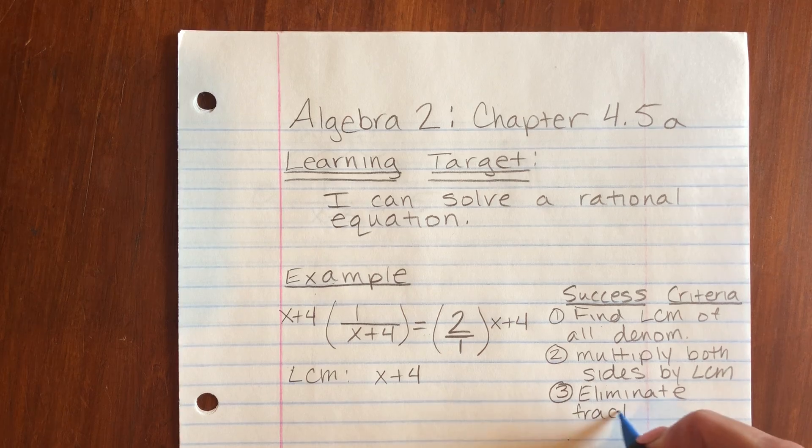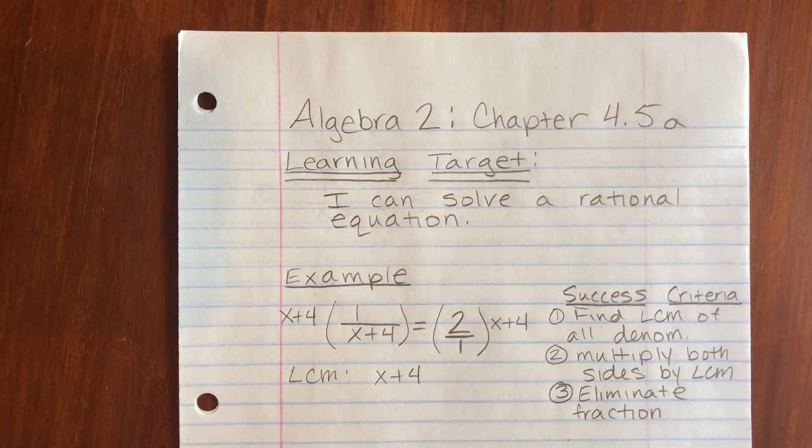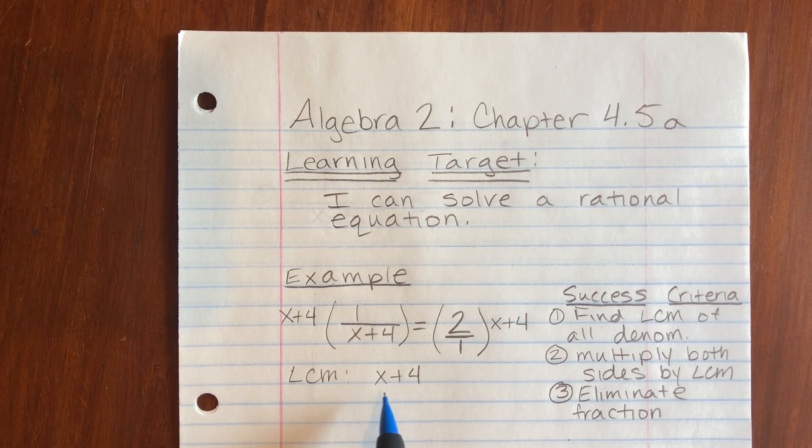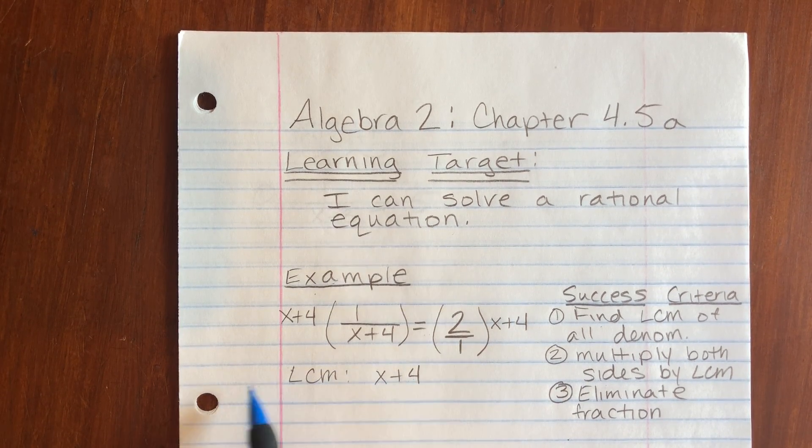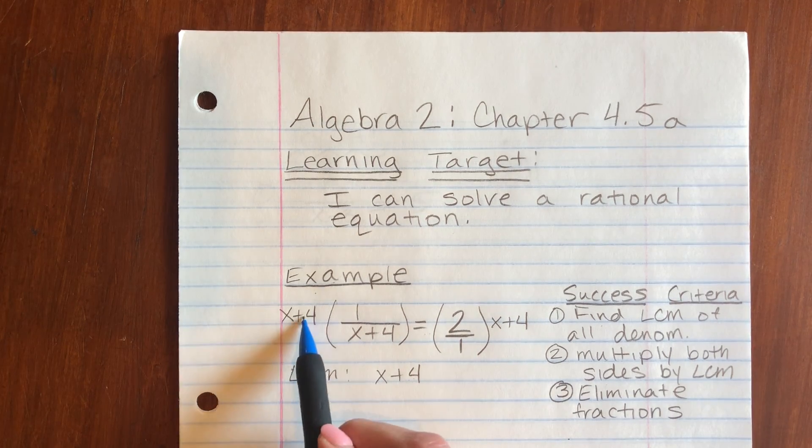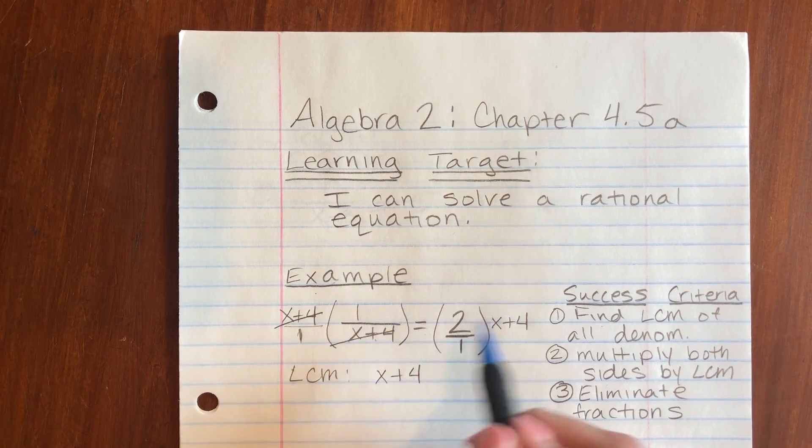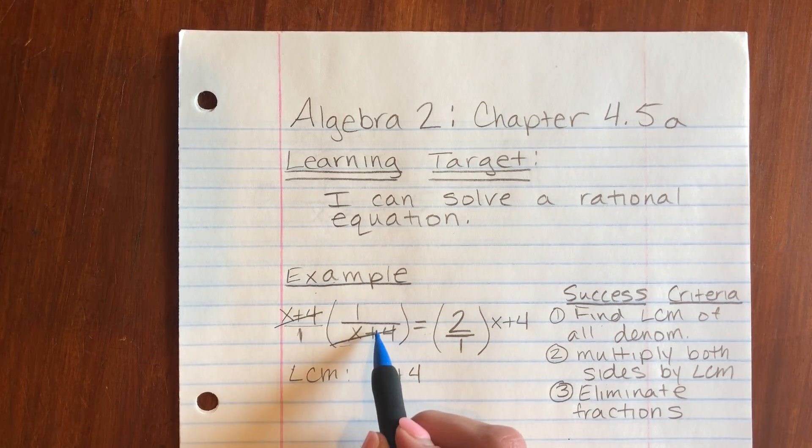And if it doesn't, if the fractions don't get eliminated at this step, that means your LCM is not right. You need to go back and look at that LCM again. So if you put it over 1 like that, you can see that these cancel out. That fraction is eliminated.